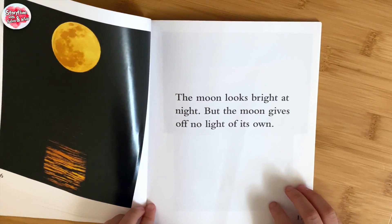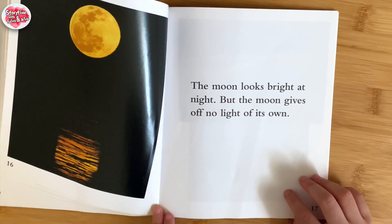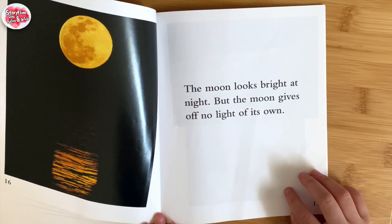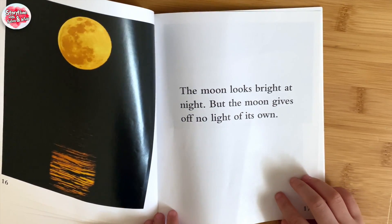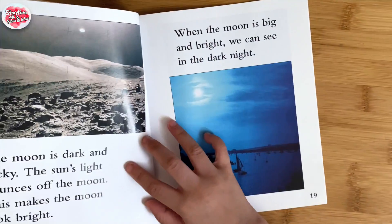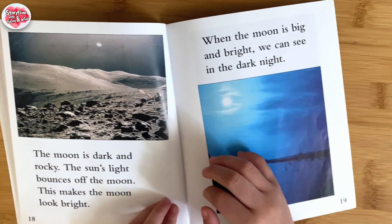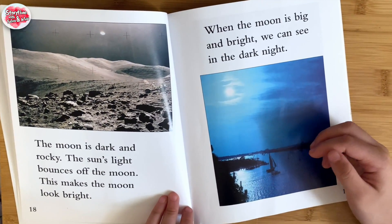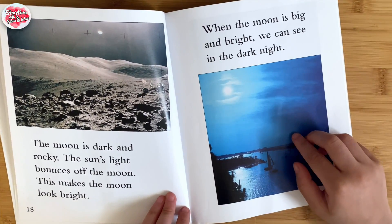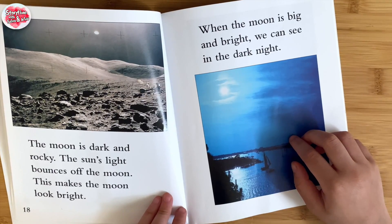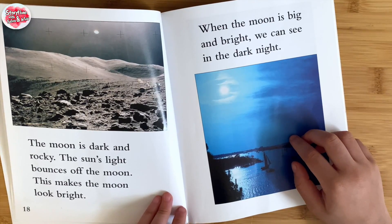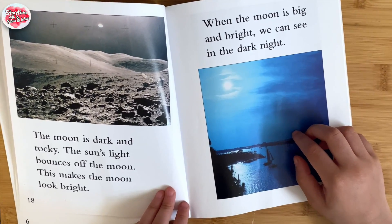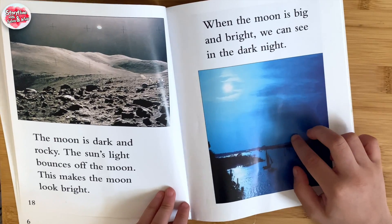The moon looks bright at night. The moon gives off no light of its own. The moon is dark and rocky. The sun's light bounces off the moon. This makes the moon look bright.